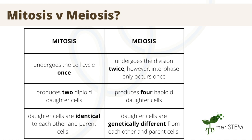We'll now move on to meiosis, which is similar to mitosis in some ways, but some differences are outlined below. Firstly, the cell cycle does not just occur once like in mitosis, but actually occurs twice, with the exception of the interphase, which only happens once in both. These two cycles are known as meiosis 1 and meiosis 2. Secondly, meiosis results in four haploid cells, meaning that they contain one set of chromosomes. And lastly, these haploid daughter cells are different to the diploid mother cell, unlike mitosis, where the mother and daughter cells are identical.